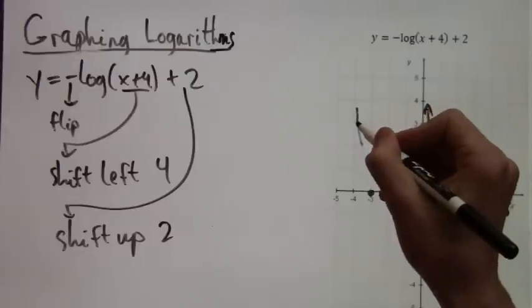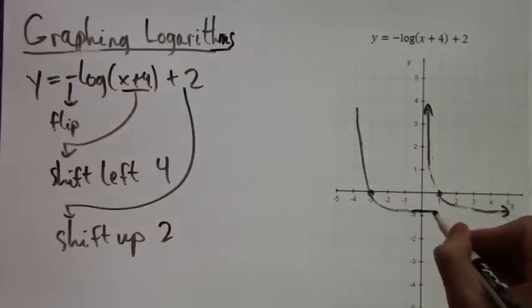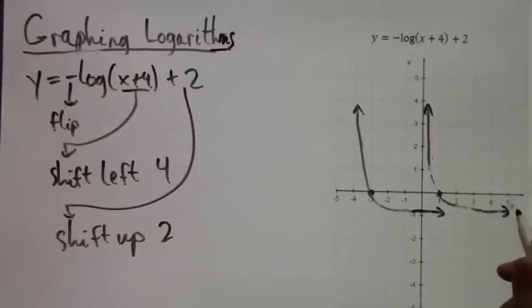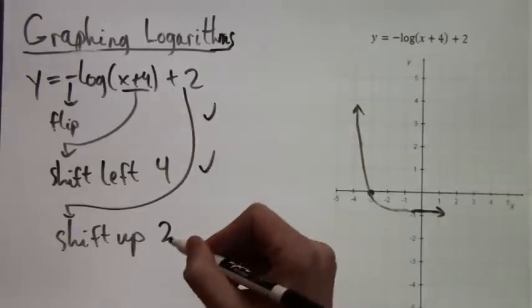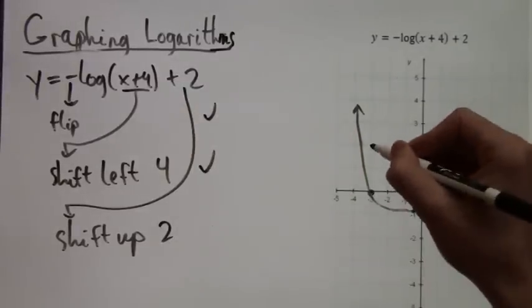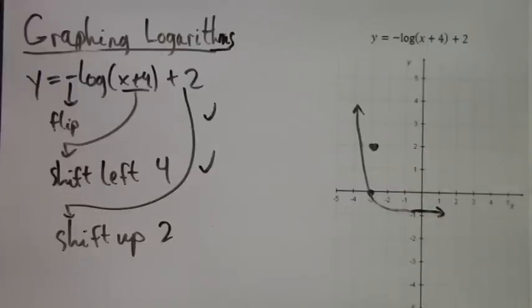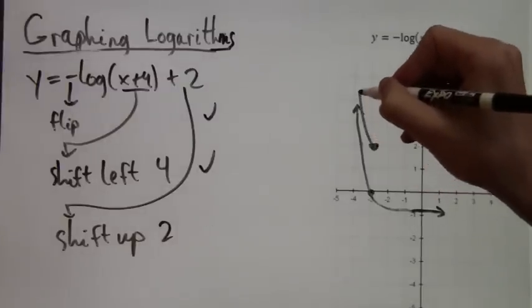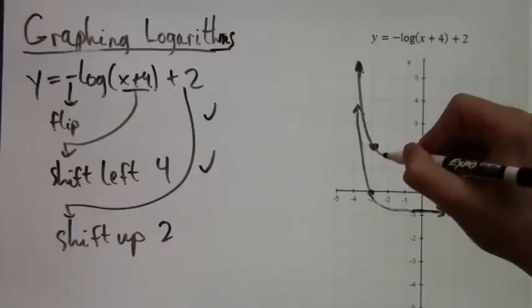We still have that important pivot point—the (1,0) that we started with moves over four units, and I've drawn (-3,0) and everything else is drawn accordingly just going through that point. Now I have to shift up two, so the pivot point I'll move up to there and we just draw the rest of the graph through it.